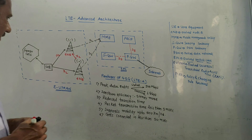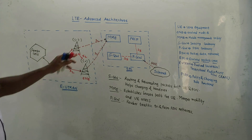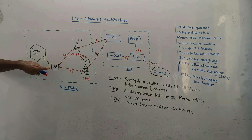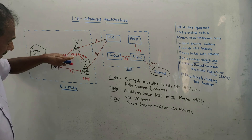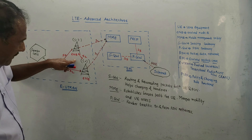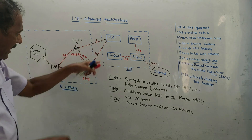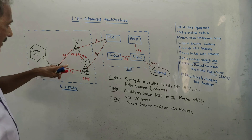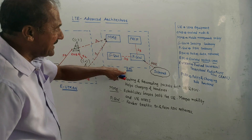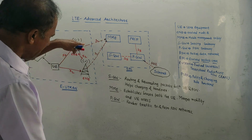Now let us discuss the functions of each part. The interface X2, as shown in this architecture, is used to connect UE with eNB, as well as to connect base stations of eNB — since the base station is an integral part of eNB. Everything shown in red represents an interface. S1 is the interface used to connect E-UTRAN and EPC.